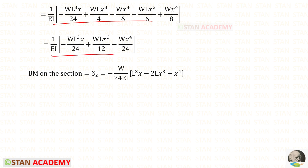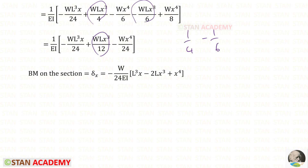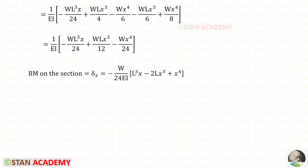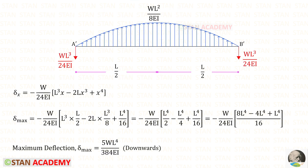After simplifying using a calculator: 1/4 − 1/6 = 1/12, and −1/6 + 1/8 = −1/24. We can take −w/24 outside. This is the expression to find the moment at any point in the conjugate beam, and hence the deflection at any point in the real beam. To find the maximum deflection, which occurs at the center, we substitute x = l/2 and simplify to get the final result.